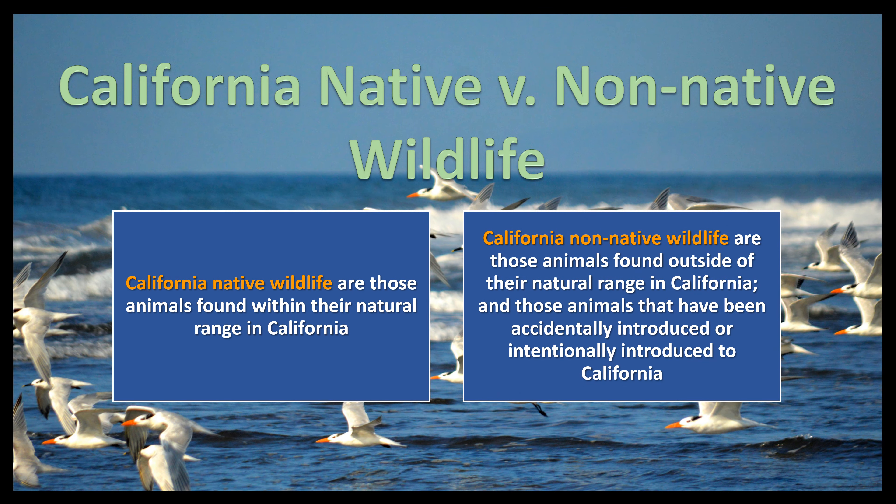California native wildlife are those animals found within their natural range in California. California non-native wildlife are those animals found outside of their natural range in California and those animals that have been accidentally or intentionally introduced to the state.